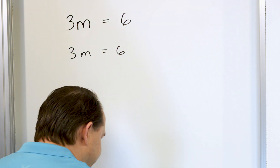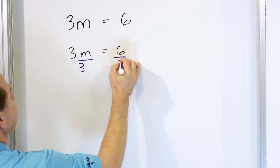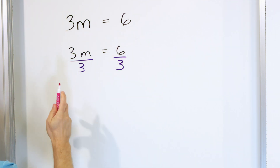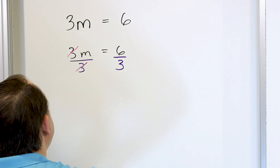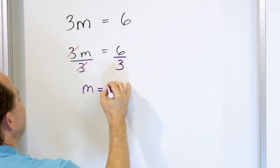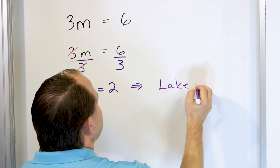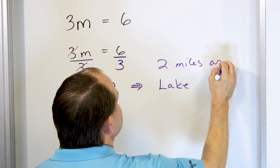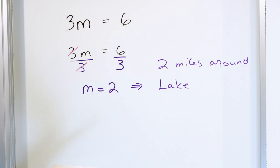What is happening here is we're multiplying by three. We want to get rid of that by dividing by three — that's what we always want to do. We have a three on the top and a three on the bottom; they're canceling. The only thing left on the left-hand side is just M. On the right, six divided by three is two. So what does this mean? Two miles around the lake — that's what it basically means: two miles around the lake one time.